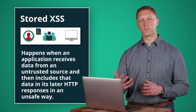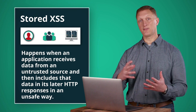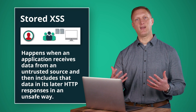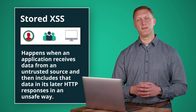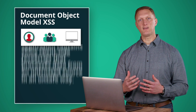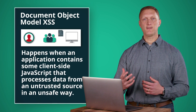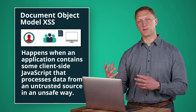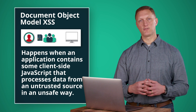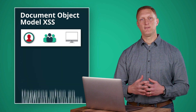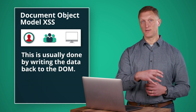Another is stored or persistent cross-site scripting. This happens when an application receives data from an untrusted source and then includes that data in its later HTTP responses in an unsafe way. The last is the document object model, or DOM, cross-site scripting. This happens when an application contains client-side JavaScript that processes data from an untrusted source in an unsafe way, usually by writing data back to the DOM.